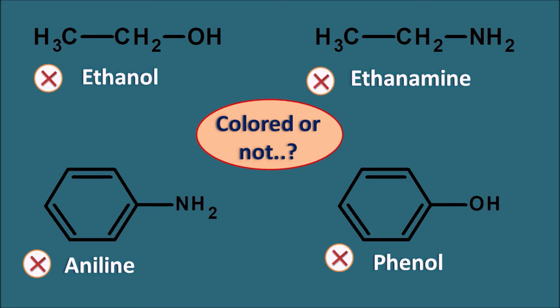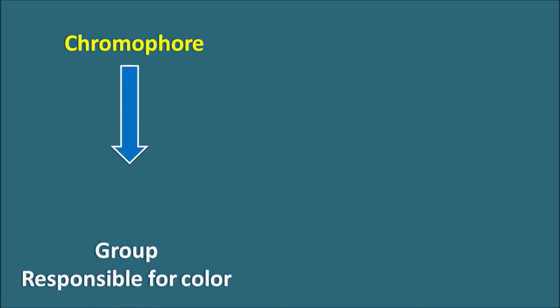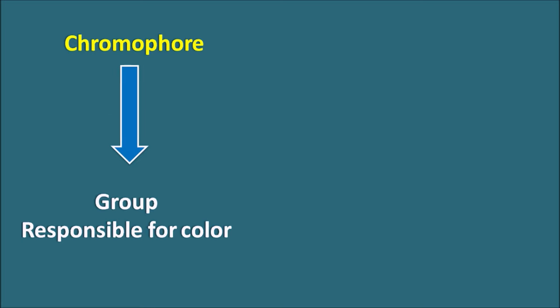We can observe polar functional groups here: in ethanol, the OH group is present, and in ethanamine, the NH2 group is present. Similarly, aniline has the NH2 group attached to the aromatic ring system, and phenol has the OH group attached to the aromatic ring system. Even though these four compounds have polar functional groups, they are still colorless. So, chromophore is the group in the molecule which is responsible for the color.